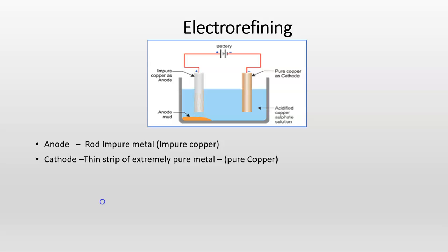A thin strip of extremely pure metal is made the cathode and the electrolyte is a suitable salt solution of the anodic metal.